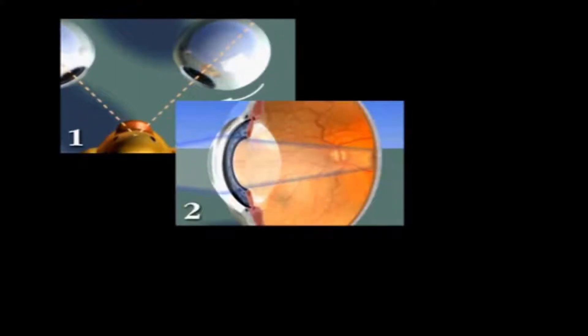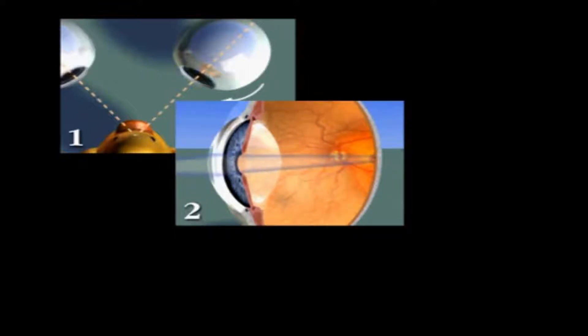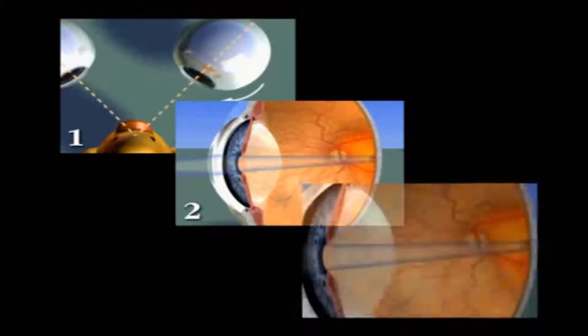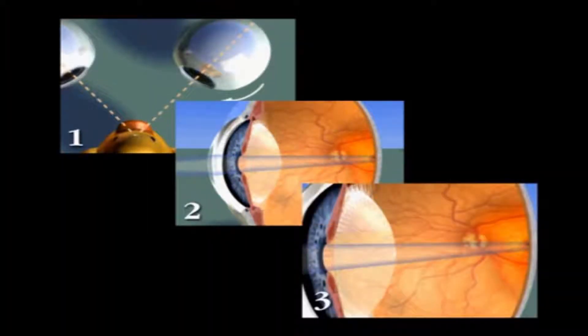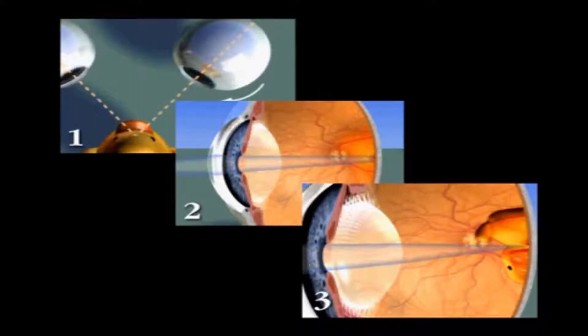As a result, the image is focused on the fovea. Combined, convergence, pupillary constriction, and rounding up of the lens all function to keep an object in focus as it approaches the eye.